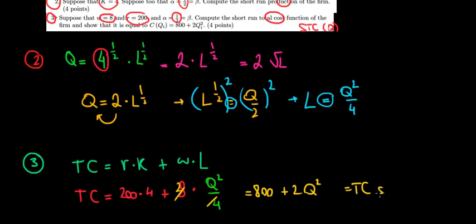That's gonna happen in the short run. If we have a look at the question, they actually say prove that it's equal to 800 plus 2Q square. We proved it. So there we go, we are done.